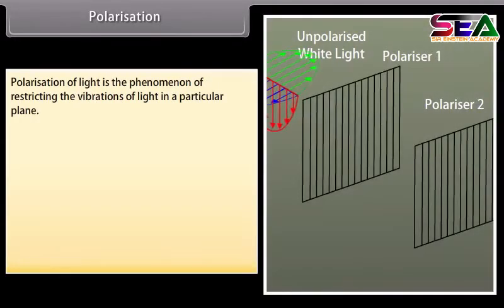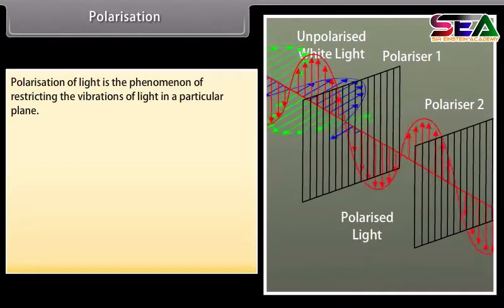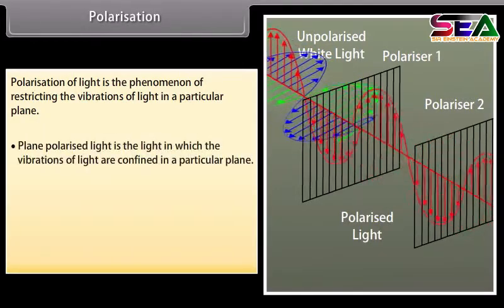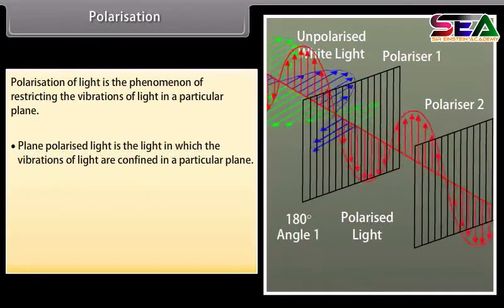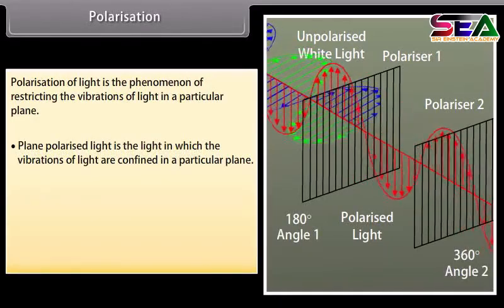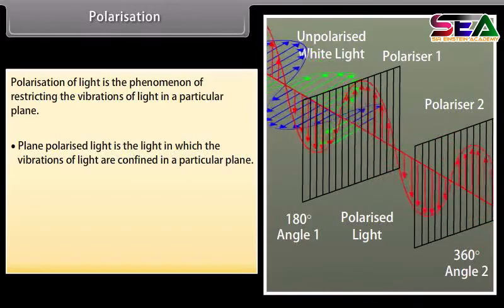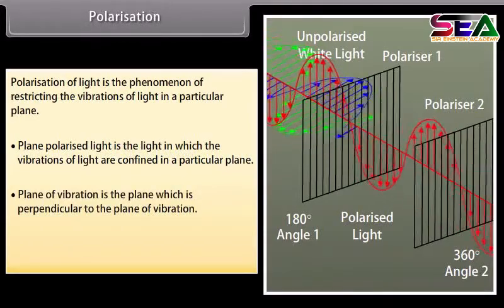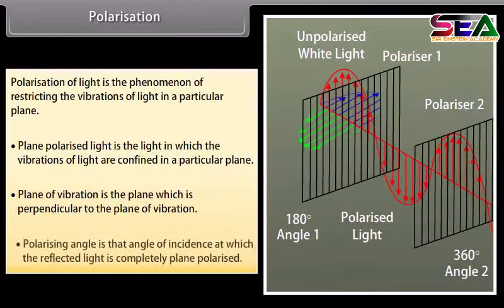Polarization. Polarization of light is the phenomena of restricting the vibrations of light in a particular plane. Polarized light is the light in which the vibrations of light are confined in a particular plane. Plane of vibration is the plane which is perpendicular to the plane of polarization. Polarizing angle is that angle of incidence at which the reflected light is completely plane polarized.